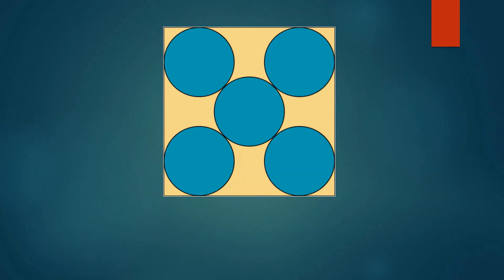To begin the solution, first we will join the centers of the two circles at the bottom as shown. This line is clearly perpendicular to the side of the square. Can you see why? Think about it.